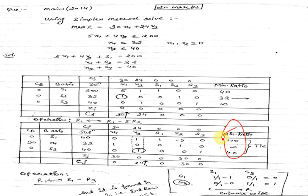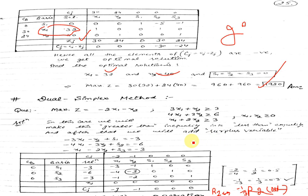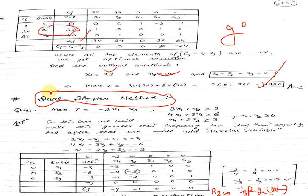Now in this lecture we are going to study about the dual simplex method. I haven't found a question asked on the dual simplex in UPSC specifically, but since it is mentioned in the syllabus, we will study it. I will take a good example: maximize Z equal to this objective function. Notice these three inequalities are in the greater-than form.